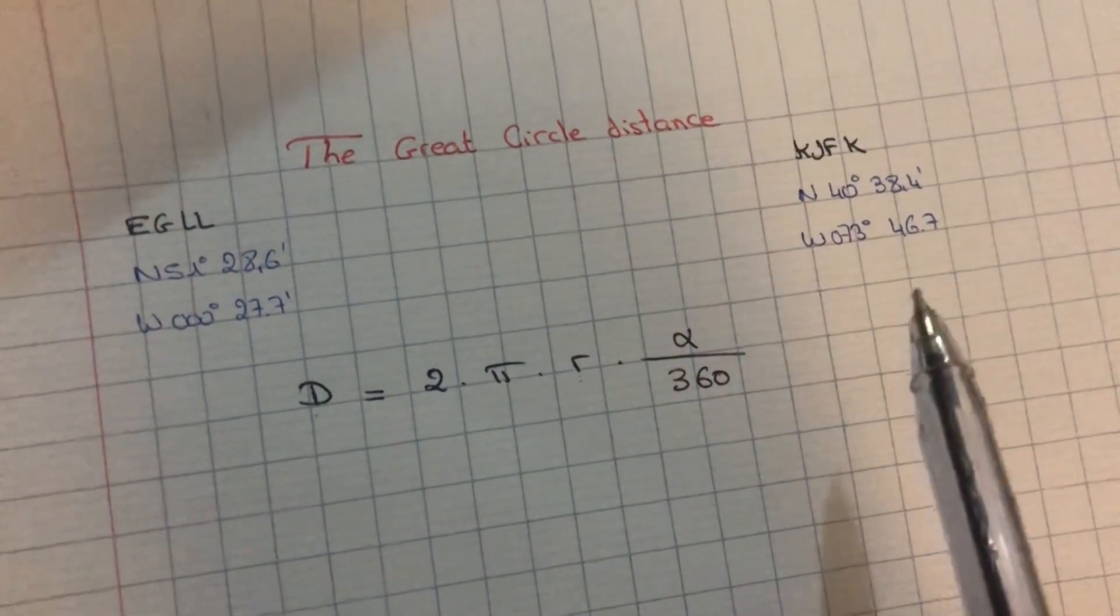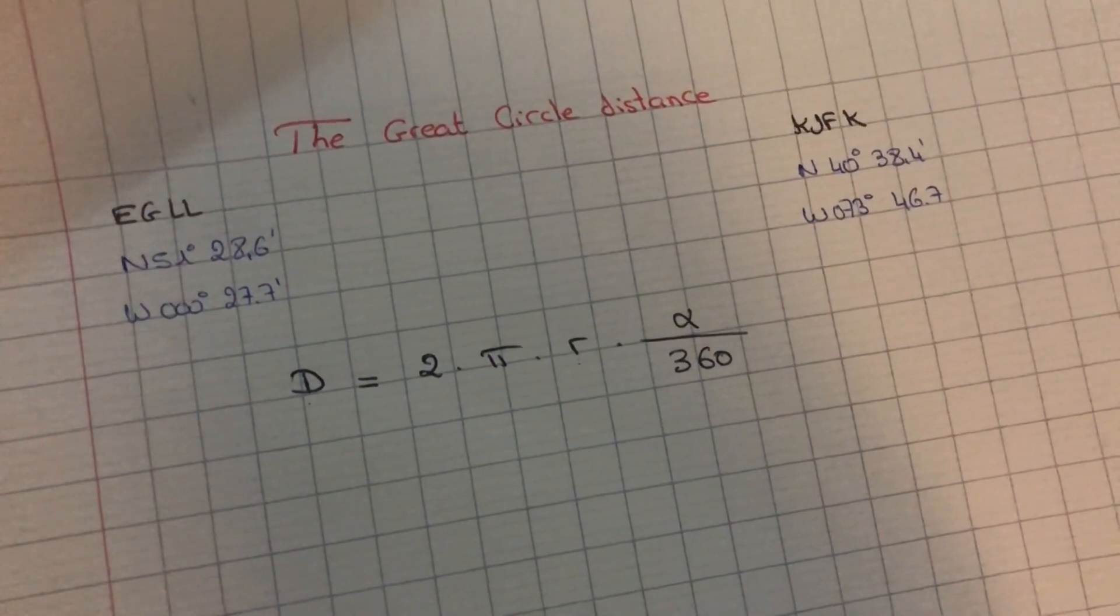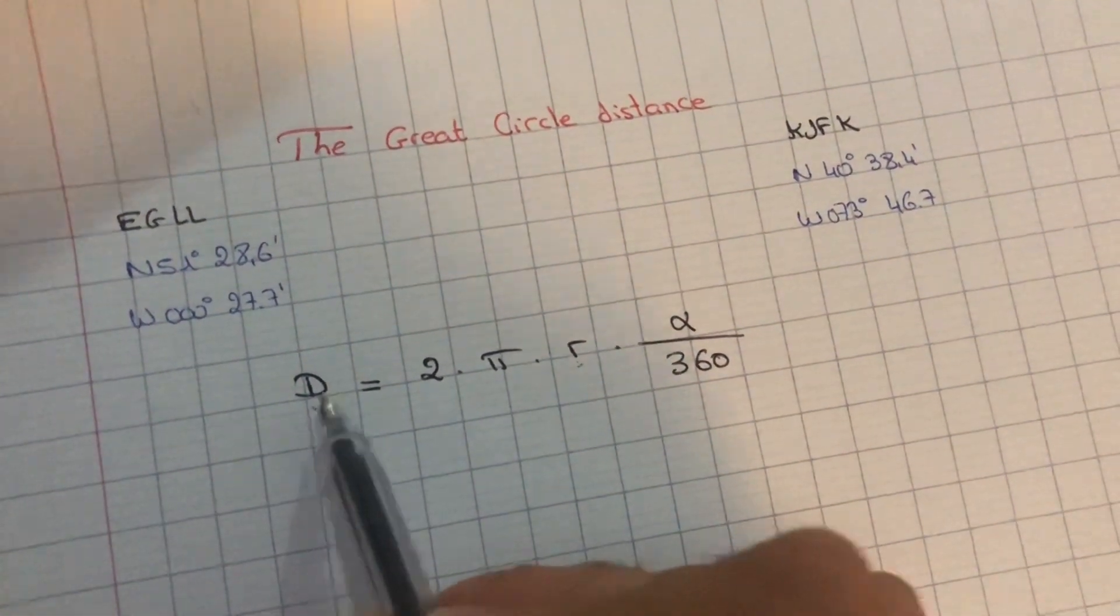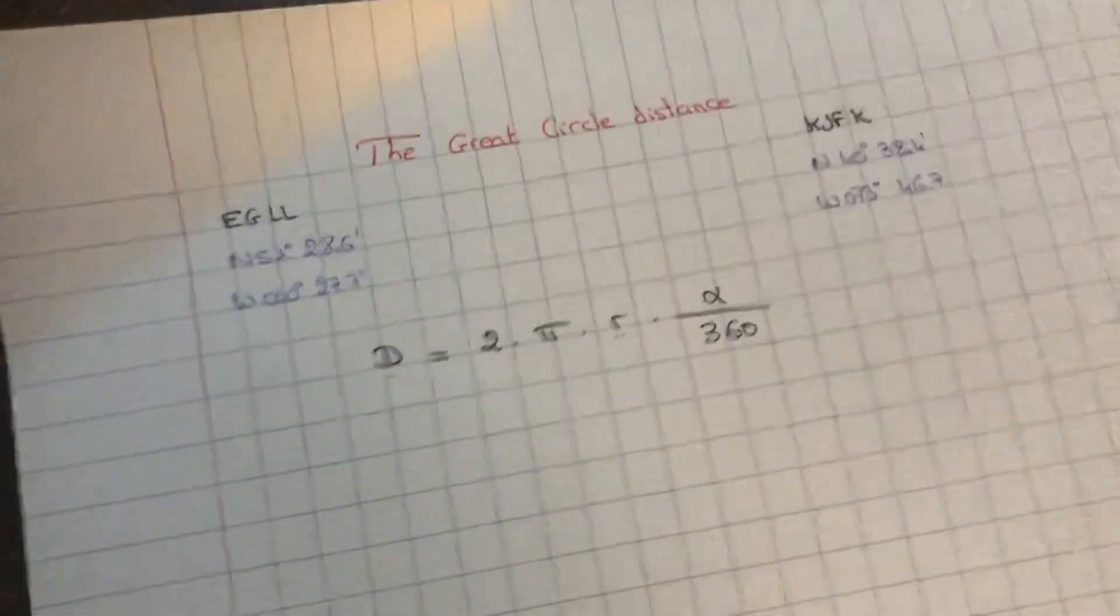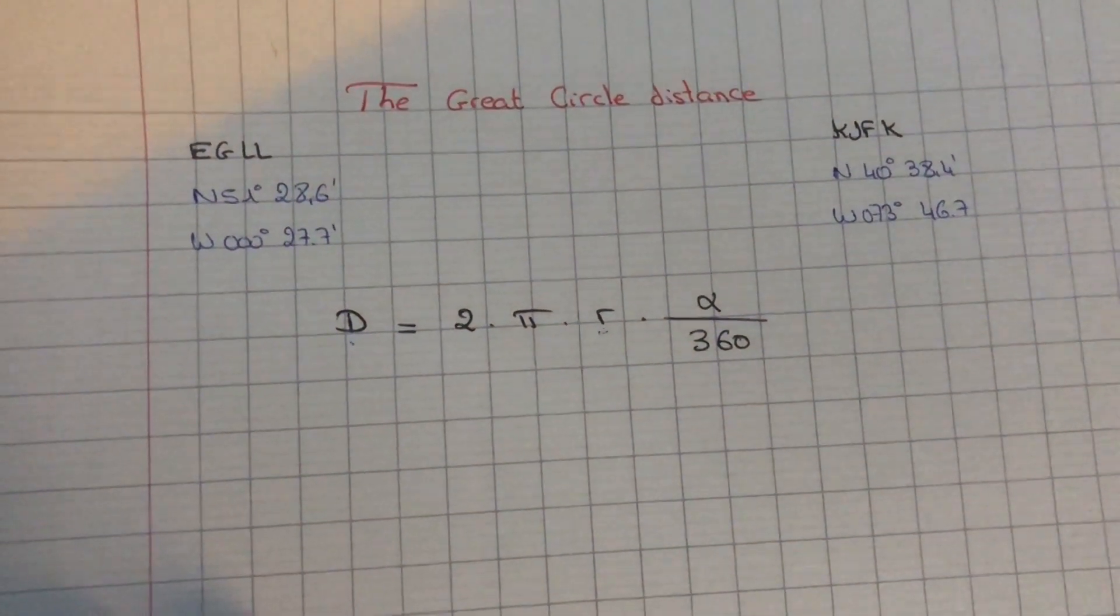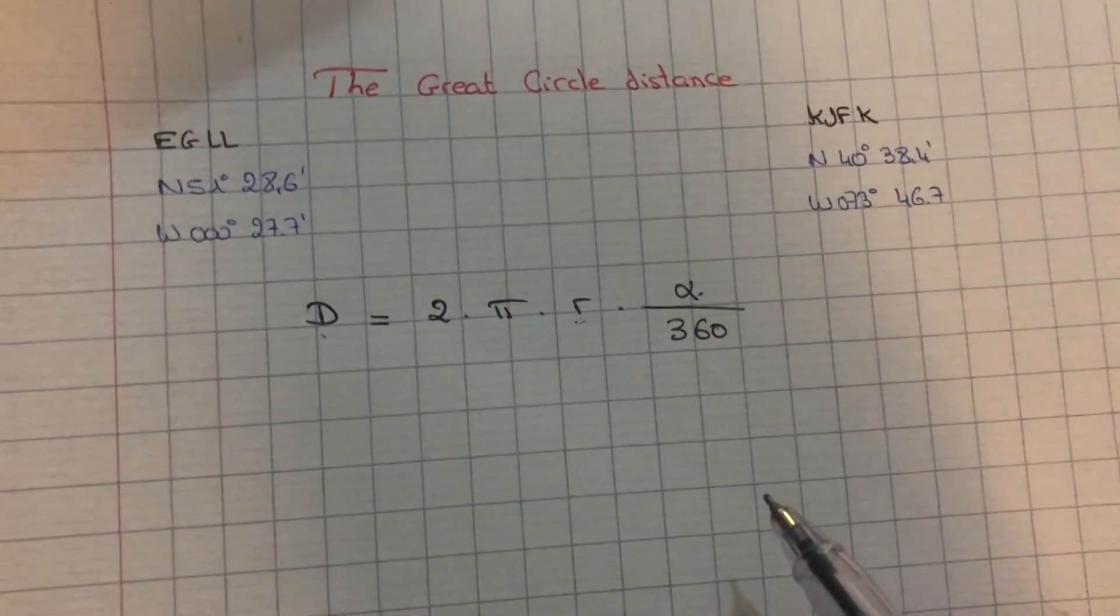So if we are looking for the distance in nautical miles, we make sure the r, which is the radius of the Earth—the approximate radius of the Earth, like we said the Earth is not a perfect sphere—has to be in nautical miles. If we're looking for the distance in kilometers, this one has to be in kilometers, and so forth.